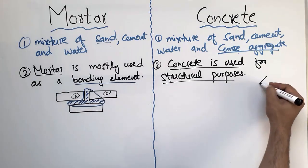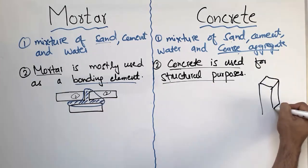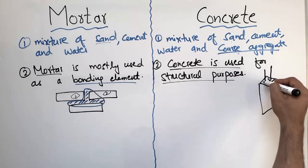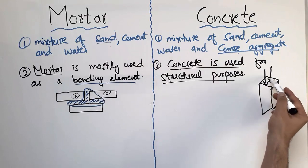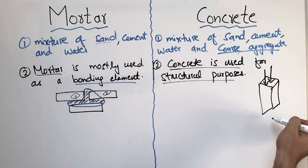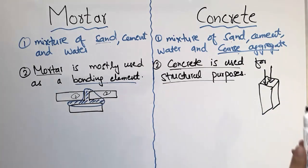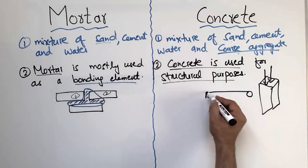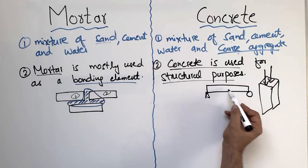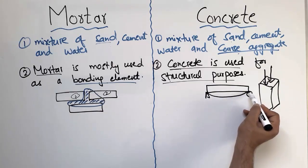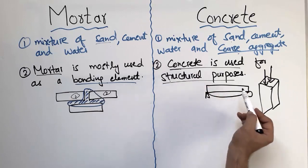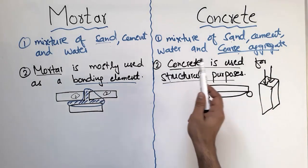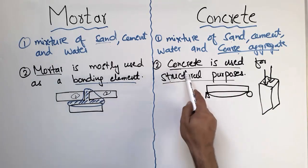For example, a column made of concrete takes the load from the above stories or buildings and transfers it to the foundation or footing. Similarly, a beam made of concrete takes load and deflects. These are structural members, so concrete's purpose is quite different from mortar — concrete is used for structural purposes, not bonding.